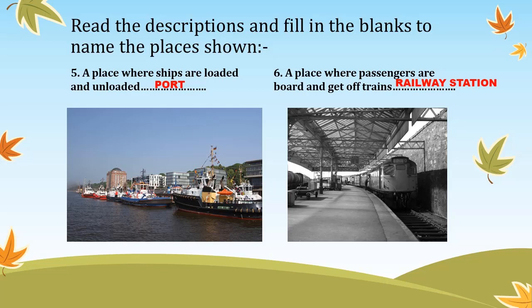The fifth description is a place where ships are loaded and unloaded — we call it a port. The sixth description is a place where passengers board and get off trains. You all must know it — it is called a railway station.